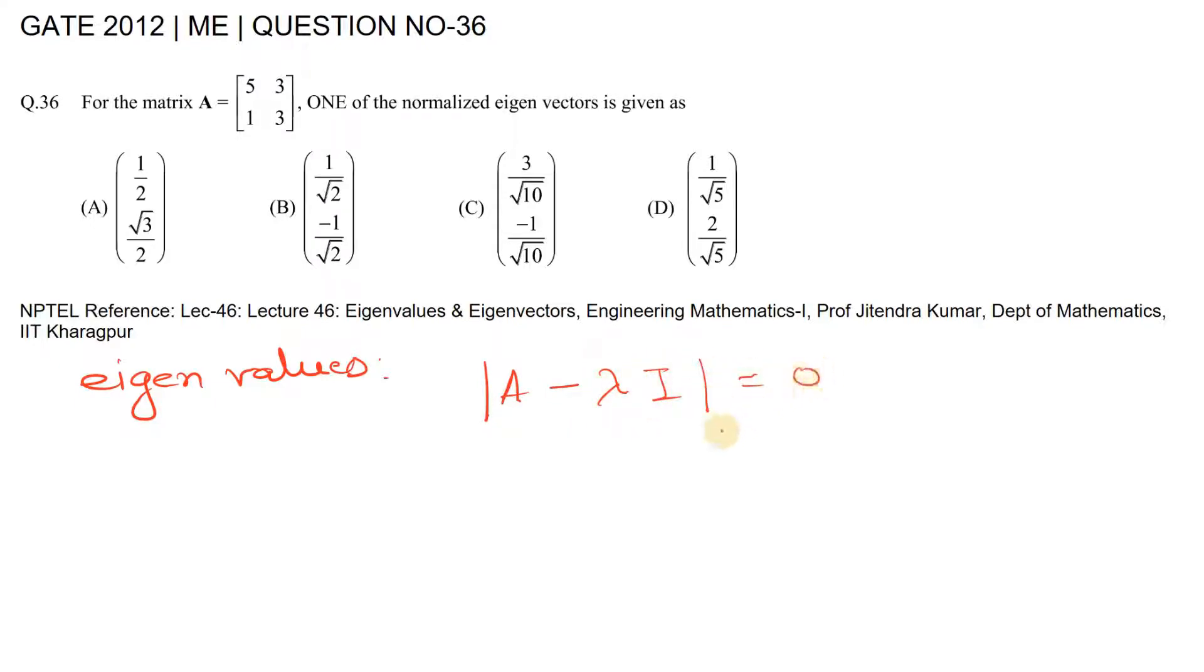The determinant of this should be equal to zero. If we equate it to zero, we'll get the value of lambda, which is the eigenvalues.